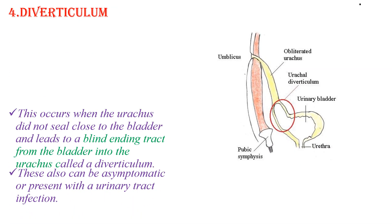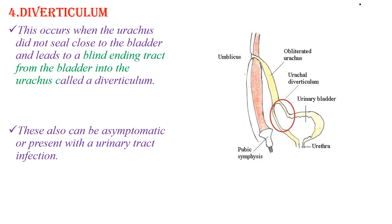The fourth one is diverticulum. This occurs when the urachus did not seal close to the bladder and leads to a blind-ending tract from the bladder into the urachus, called the diverticulum. There is no connection with the umbilicus. This can also be asymptomatic or present with recurrent urinary tract infection.